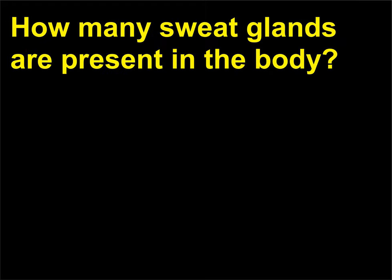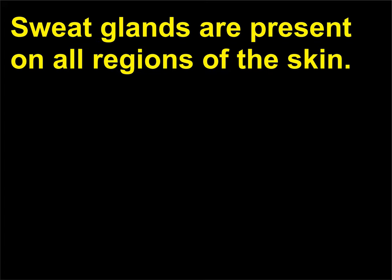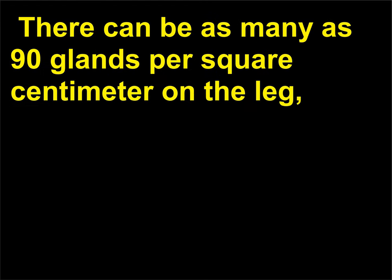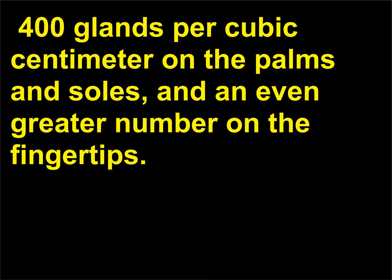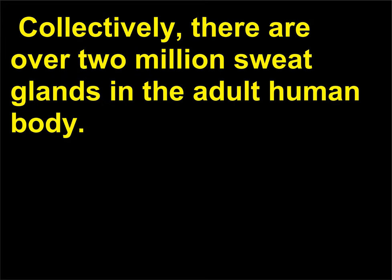How many sweat glands are present in the body? Sweat glands are present on all regions of the skin. There can be as many as 90 glands per square centimeter on the leg, 400 glands per square centimeter on the palms and soles, and an even greater number on the fingertips. Collectively, there are over 2 million sweat glands in the adult human body.